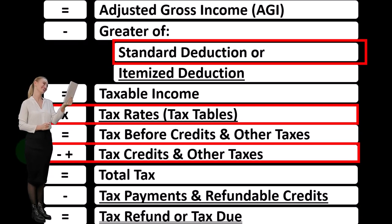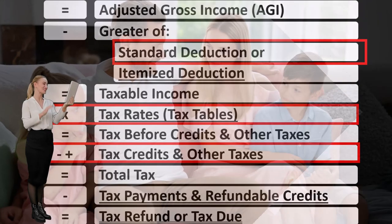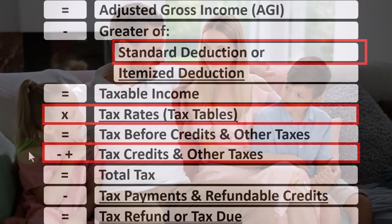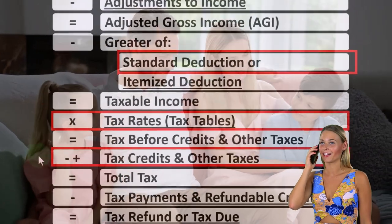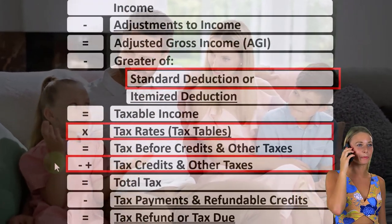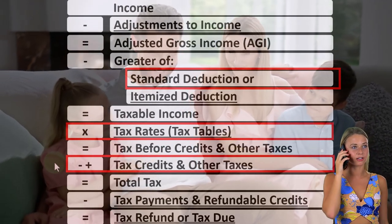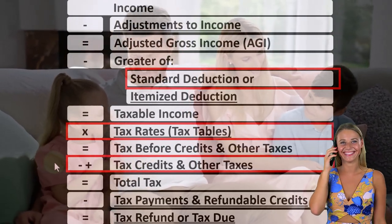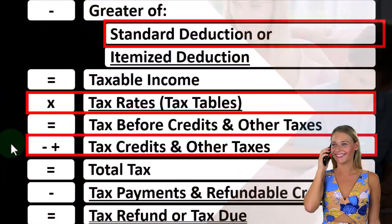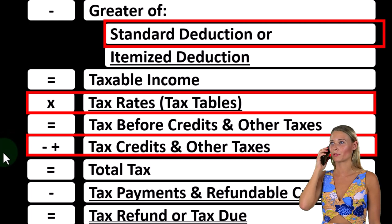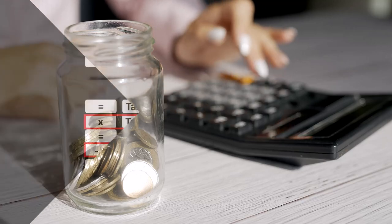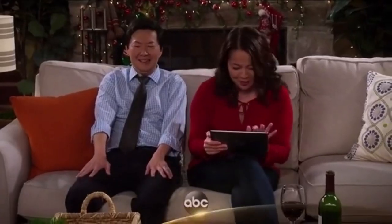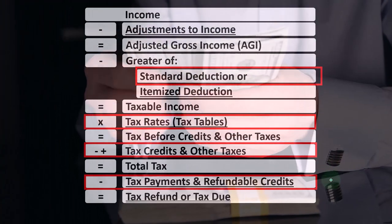Then we could have an impact on the credits. If it's a qualifying child, you could have a significant credit. If it's not a qualifying child, you might have an other dependent credit impact. The exemption component was changed to credits — the child tax credit and the other dependent credit. For the child tax credit, there could be a non-refundable component and a refundable component.